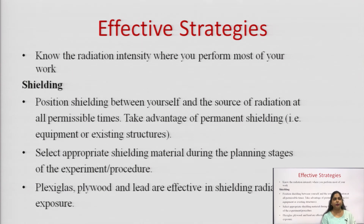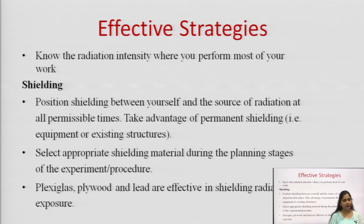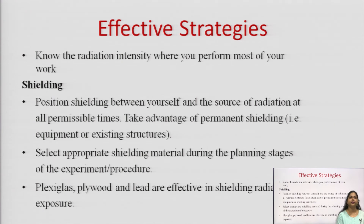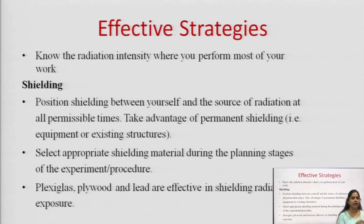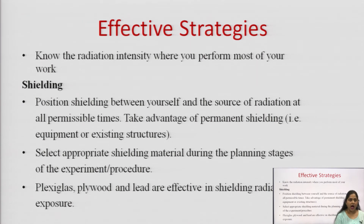One should know the intensity of the radiation where they are performing their work. The next strategy is shielding. Alpha rays can be blocked even by a piece of paper, beta rays can be blocked by aluminum, and gamma rays can be blocked using concrete or lead. Position shielding means placing a shield between yourself and the source of radiation.